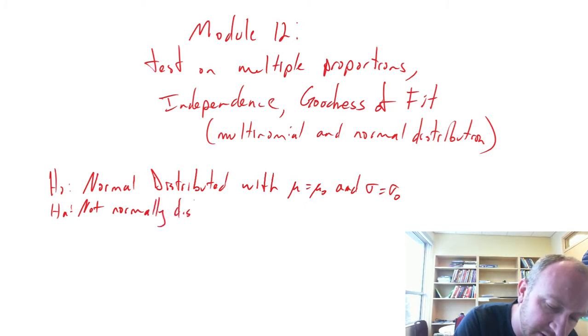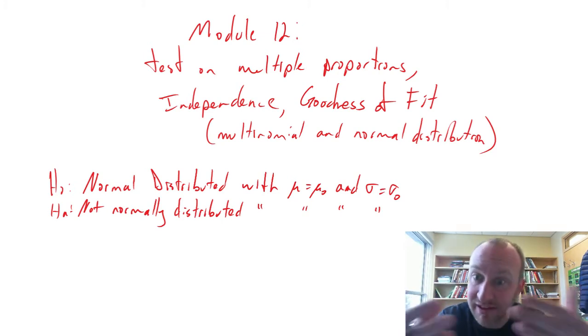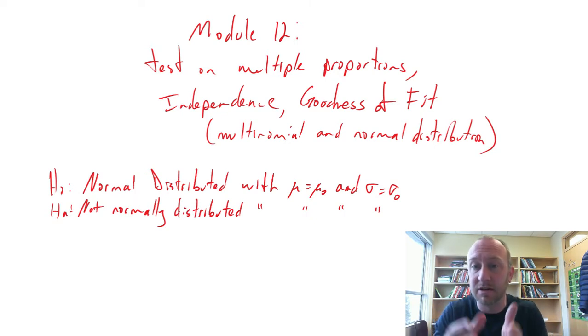These ones are long-winded to write out. Not normally distributed with mean this and sigma that. Okay, so we'll set these specified parameters and test to see do we have evidence to show that it supports the null, so it is normally distributed with these parameters, or supports the alternative that it is not normally distributed with those parameters.